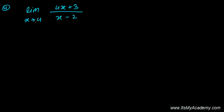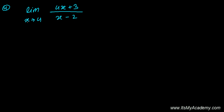This is the fourth question and now to evaluate the limit. The question is: limit as x tends to 4 of (4x + 3) divided by (x - 2). This is our function. Before solving, as I told you in the previous video, just plug the value of x, which is approaching 4, into this function and then see whether you're going to get a definite value or not.